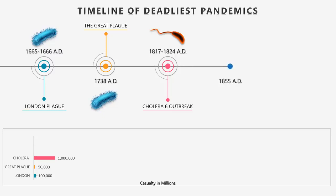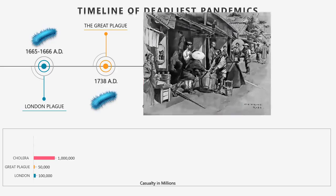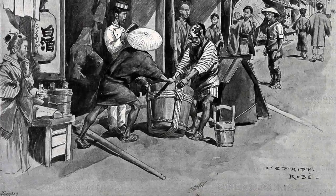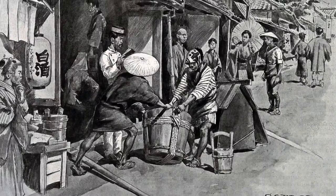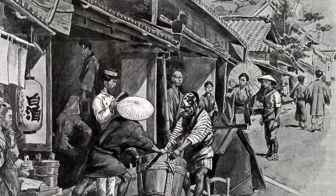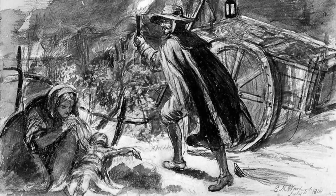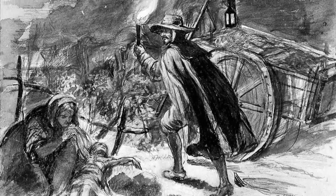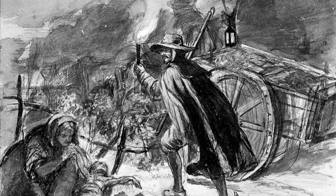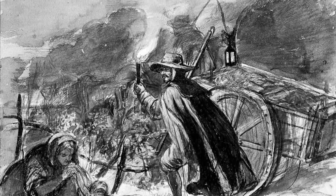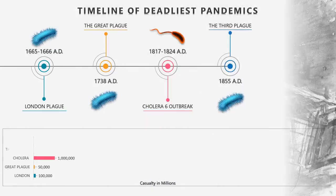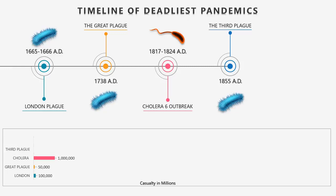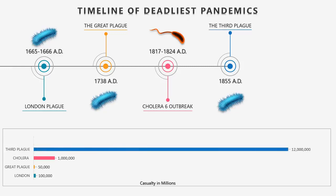At number 12: The Third Plague Pandemic of 1855. This was a major bubonic plague pandemic that began in Yunnan, China in 1855, during the fifth year of the Xianfeng Emperor of the Qing Dynasty. The episode spread to all inhabited continents and ultimately led to more than 12 million deaths in India and China, with about 10 million killed in India alone.